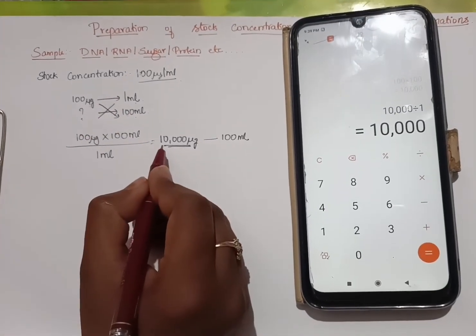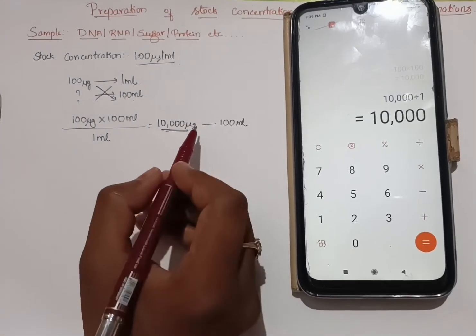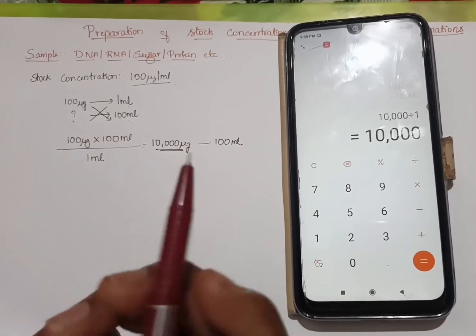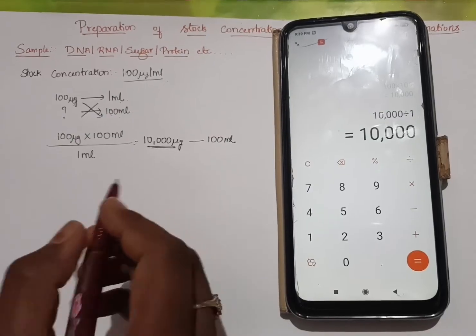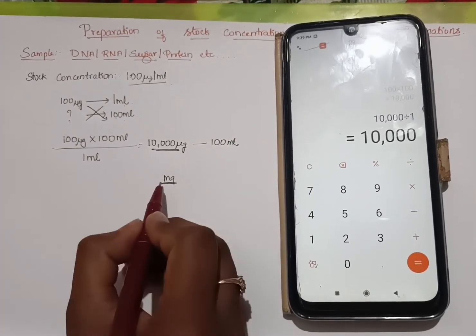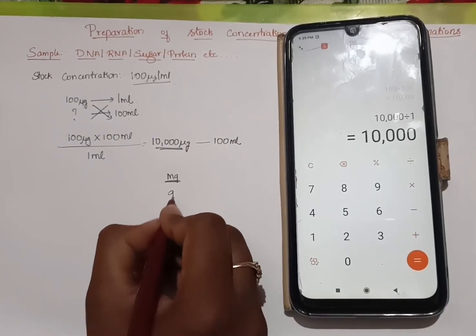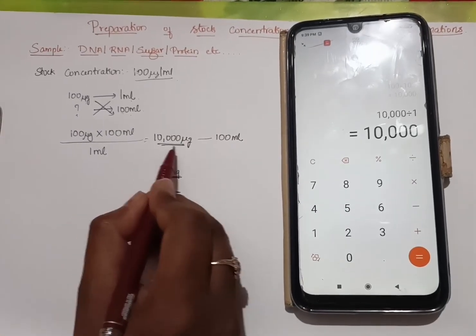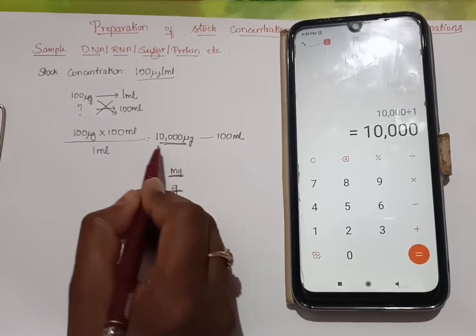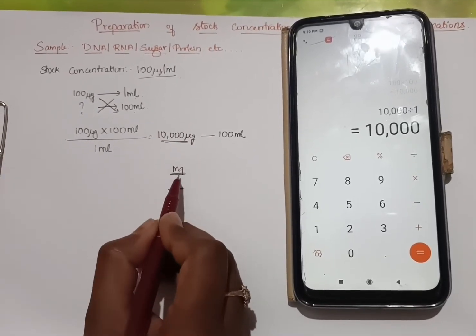Now, all our weighing balance will not have a unit as microgram. It will usually have a unit as mg. The weighing balance will always be present in mg or in grams. So let us convert this 10,000 µg or microgram into mg and grams.